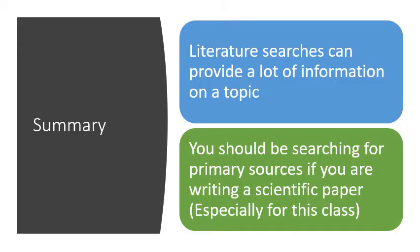That wraps up Unit 7, in which we learned how to do an actual literature search. To summarize: literature searches can provide a lot of information on a topic, you should be searching for primary sources if you're going to write a scientific paper, and you can find all those primary sources using PsychInfo in the way I taught you. Once you type in keywords from your theory, you can develop research questions and hypotheses as well.